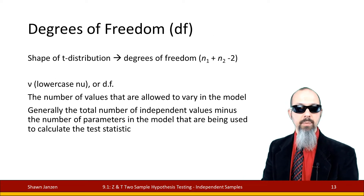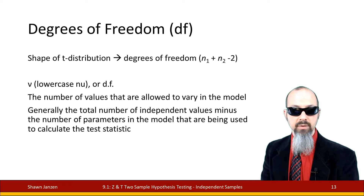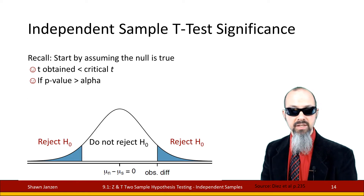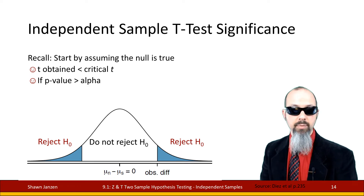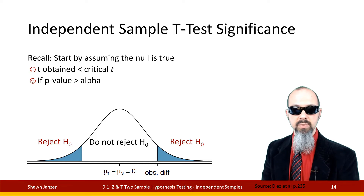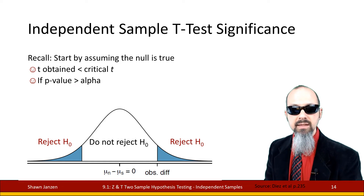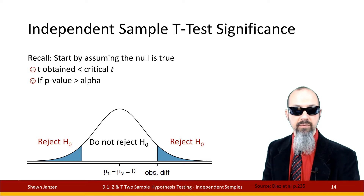Just to recap on degrees of freedom: these are the number of values in a vector of data that are allowed to vary inside your model. For the independent sample T-test for significance, start by assuming the null is true. In the two-tail version, we're looking for regions to reject the null on both the left and right tails. This distribution curve is still centered at zero — not assuming some population mean of zero, but rather that the difference between the two means is zero. We're seeing how far the standardized value is from that zero.